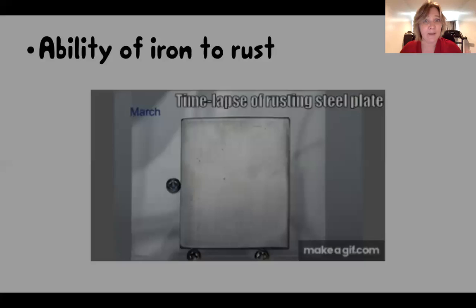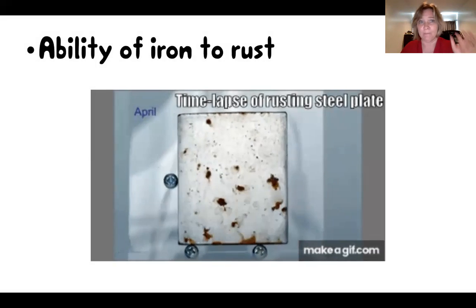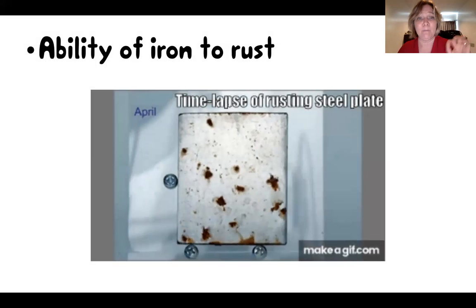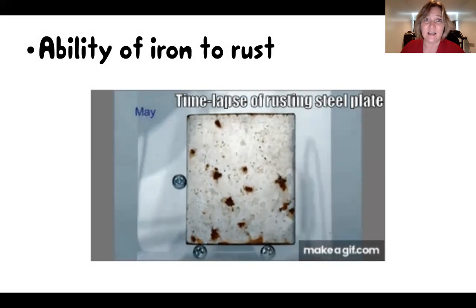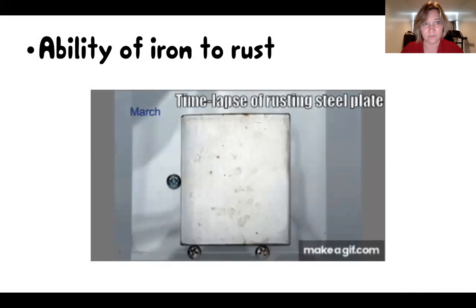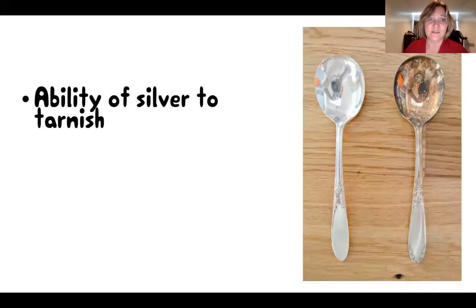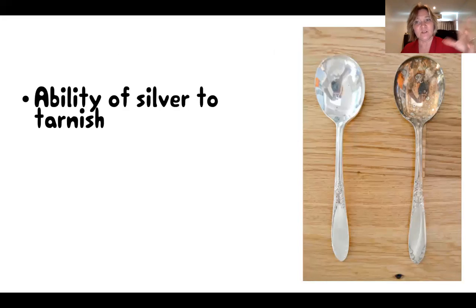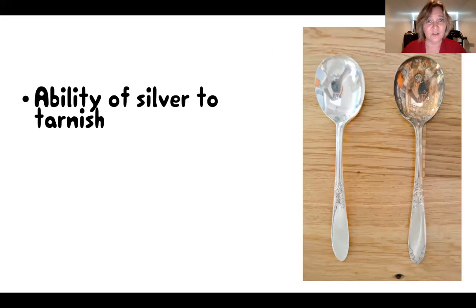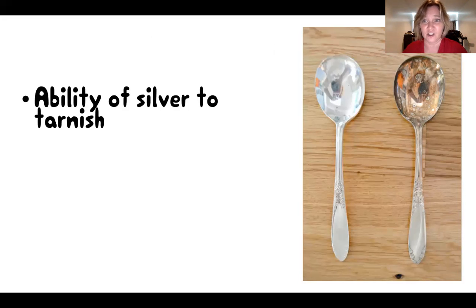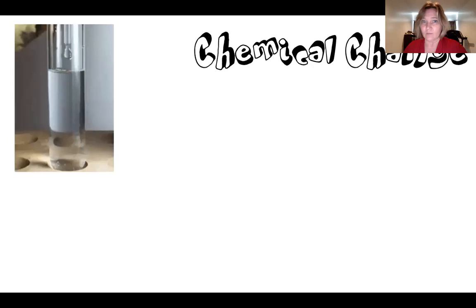Other examples of chemical change include the ability of iron to rust — rusting is a chemical change — and the ability of silver to tarnish. If you have silver bowls or silverware, most silverware we eat with now is not made from real silver but sterling silver, which has been chemically treated so that it doesn't tarnish. That darkening you see in the picture is called tarnishing.